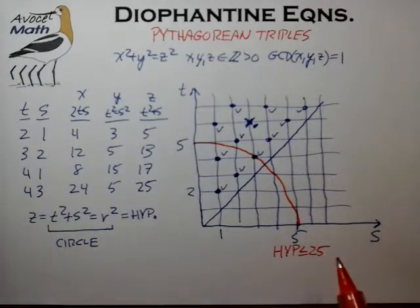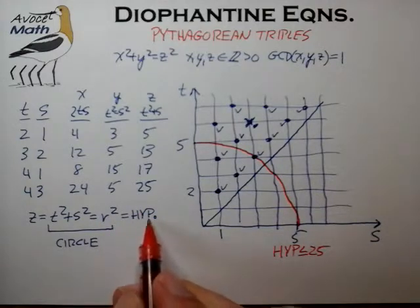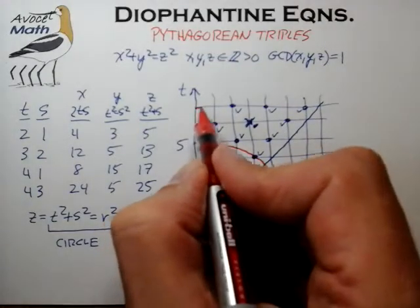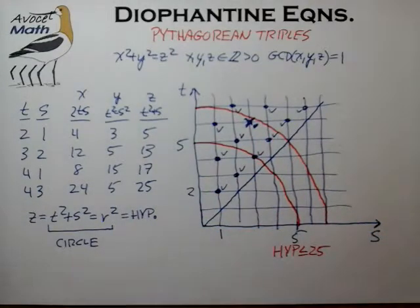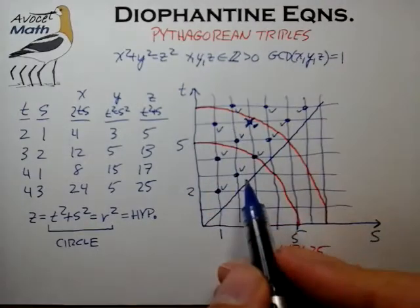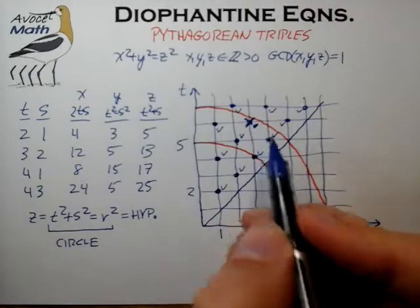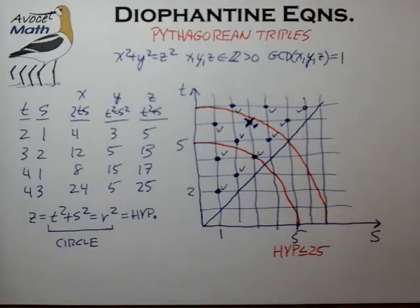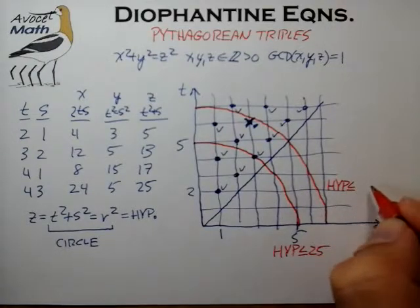The next convenient threshold is hypotenuses less than or equal to 49, which corresponds to a circle of radius 7. Drawing that circle, we pick up three additional solutions. One nearby point is just barely missed, and one point doesn't count because it's not a reduced Pythagorean triple. So this gives us the condition for hypotenuse less than or equal to 49.